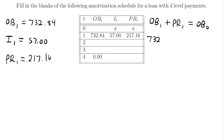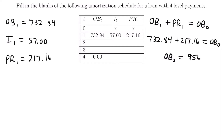We will have $732.84 plus $217.16. Adding those together gives us the outstanding balance at time equals zero, which is equal to $950.00. Let's fill that in: $950.00.